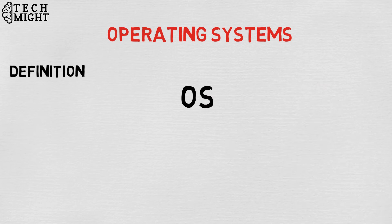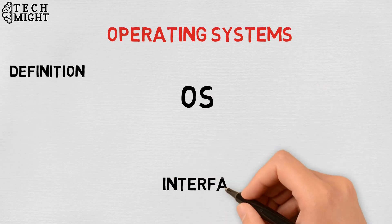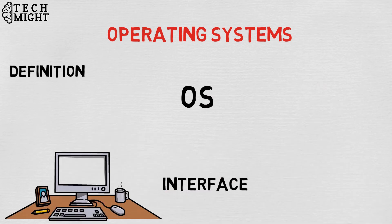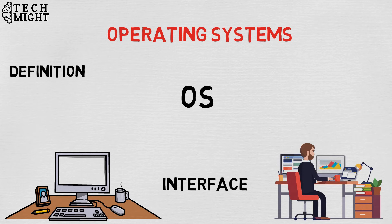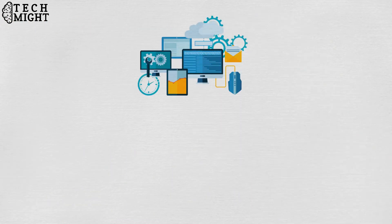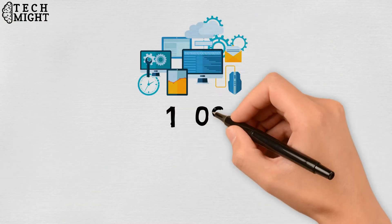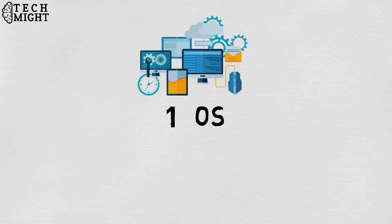An operating system is a software that acts as an interface between computer hardware components and the user. Every computer system must have at least one operating system to run other programs.